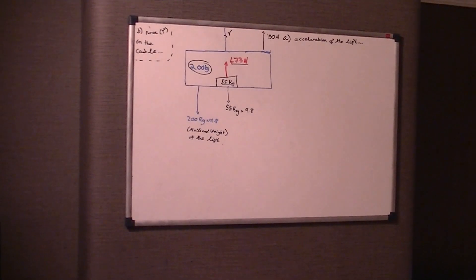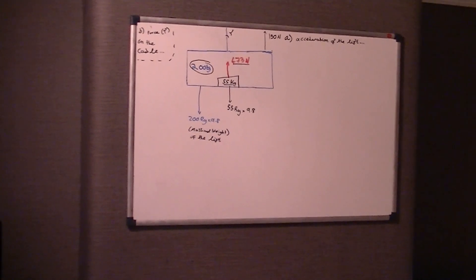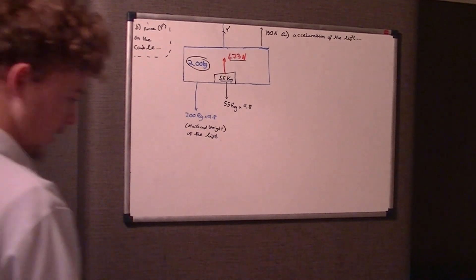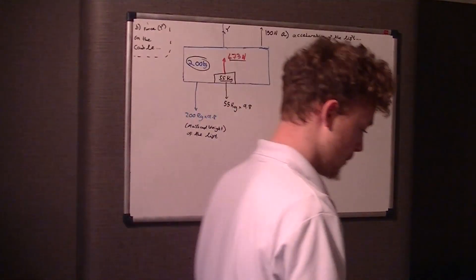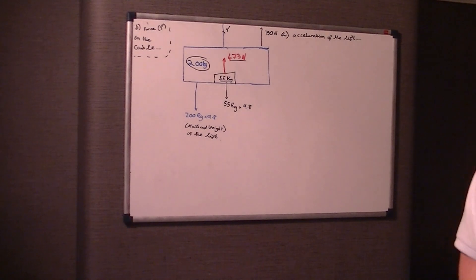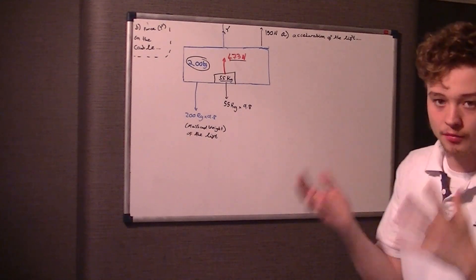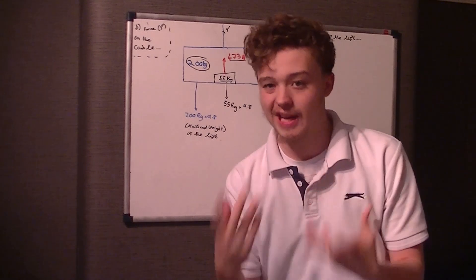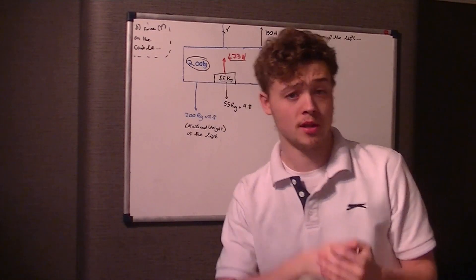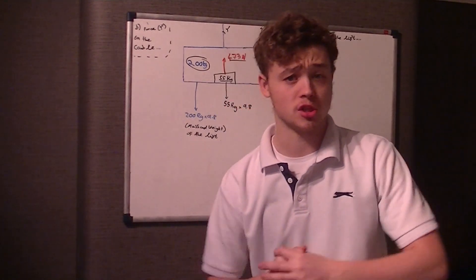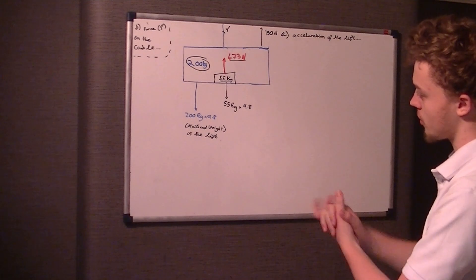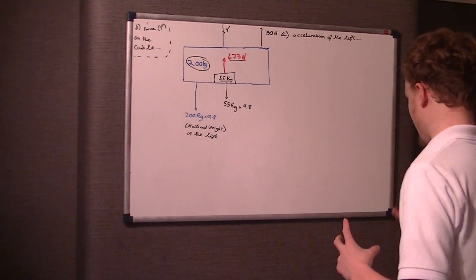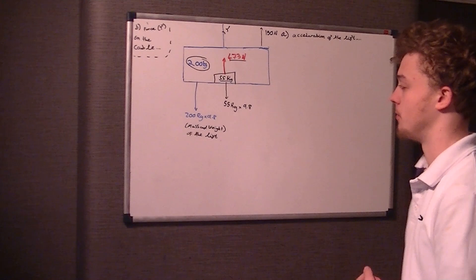Welcome, this is another Excel M1 past paper — this is the June 2015 paper. This particular question is number 4, and what I've done is I've drawn essentially the diagram that you get given with a few extra bits.